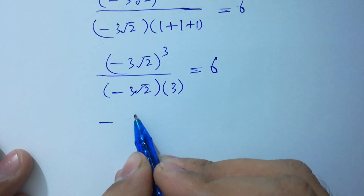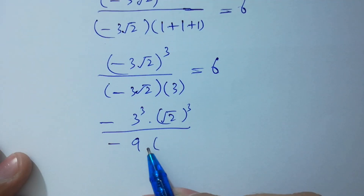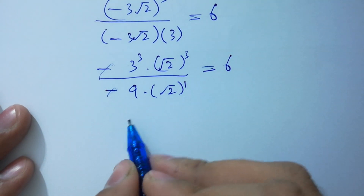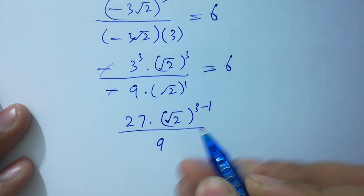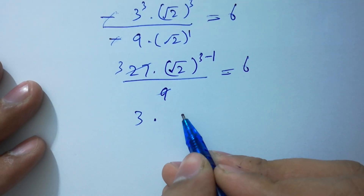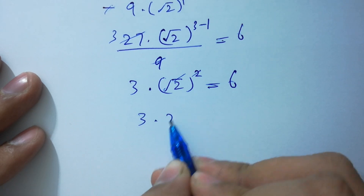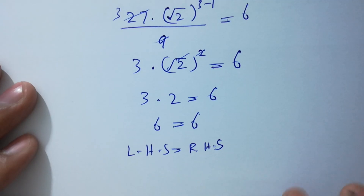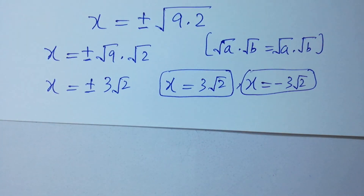We have minus 3 cubed times square root of 2 cubed over minus 3 times 3, which is 9, times square root of 2 to the power 1 equals 6. Minus and minus cancel, and 3 cubed is 27, times square root of 2 to the power 3 minus 1, which is 2, over 9 equals 6. We have 3 times square root of 2 squared equals 6. Scale cancels from square root, giving 3 times 2 equals 6, so 6 equals 6. Left hand side equals right hand side, confirming x equals 3 square root of 2 and x equals minus 3 square root of 2 are our correct answers.